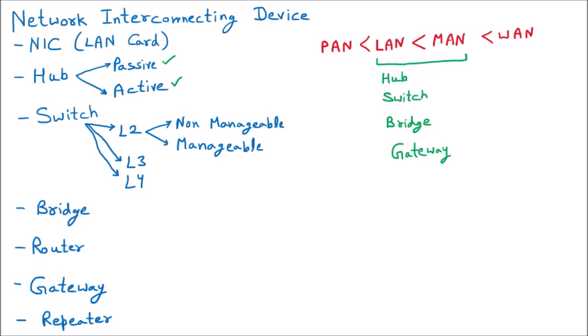After that, we are having the device which is a Repeater. So Repeater is a device that is used to regenerate the signals. Also, the NIC, which is the LAN Card, also comes under the LAN and the MAN interconnecting devices. So the LAN Card is also the same category of device.